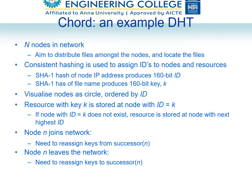In Chord, we have N nodes in the network. The node ID and key values are calculated using the SHA algorithm. SHA is a security algorithm. It is used for hashing the node IP address and file name. If we are hashing a node IP address, it generates the corresponding node ID. If we are hashing a file, it will create the corresponding key value.